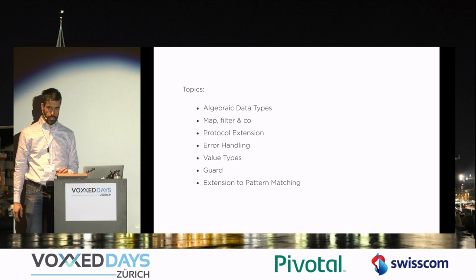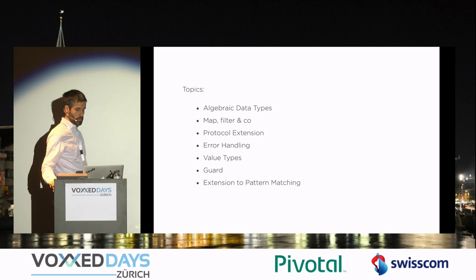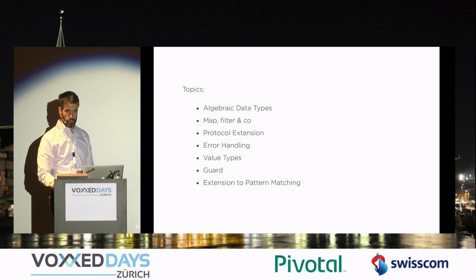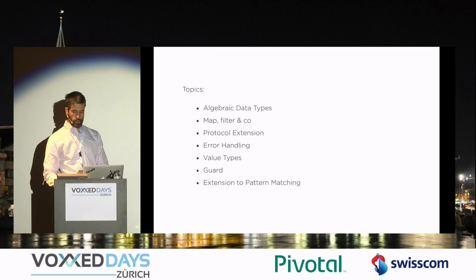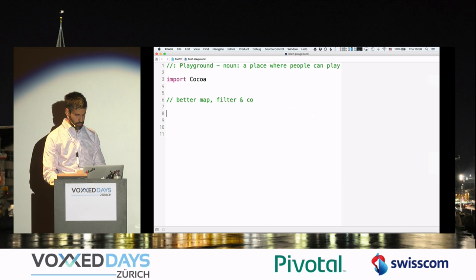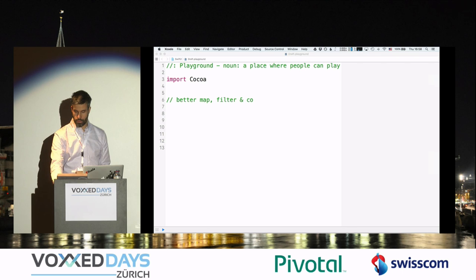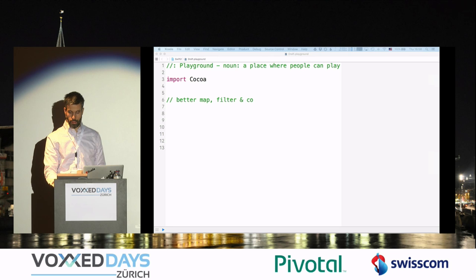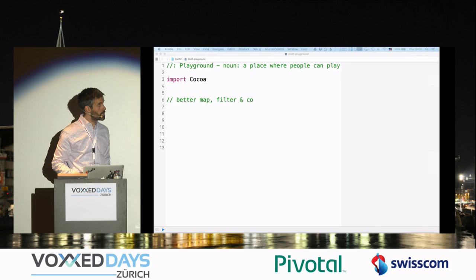This is possible thanks to protocol extensions. Before, array declared map as a method but set did not, and there were some globally defined functions operating on collection types. Now, thanks to protocol extensions, we can directly extend existing protocols. A protocol is basically like an interface in Java or a trait in Scala.